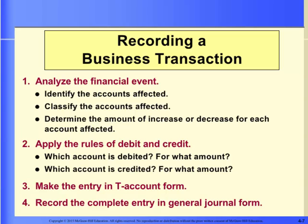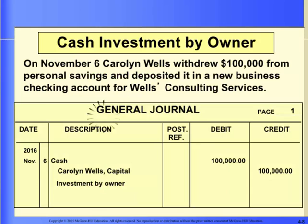Here are the steps to record a journal entry. The starting point for any company is getting money into the company. Let's journalize this initial investment by the owner in the general journal. We need to debit cash for $100,000 and credit Carolyn Wells' capital for the same amount. This is the same entry that was used to describe the specific steps earlier. Here is the general journal entry.